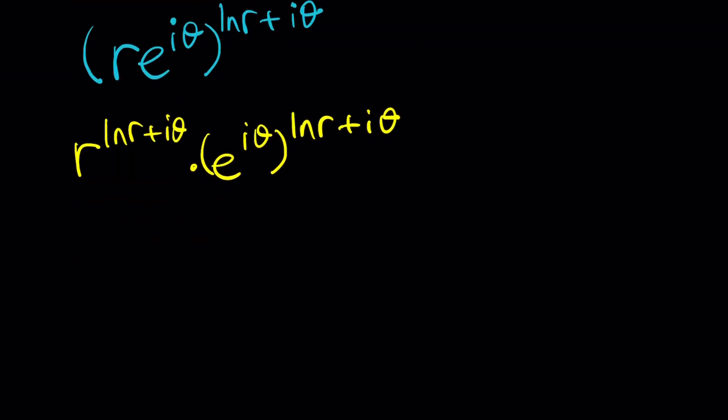So write this as R to the power ln R plus i theta times e to the i theta, and then that is raised to the power ln R plus i theta. We're going to go ahead and separate these. R to the ln R times R to the i theta, and then this one is going to be e to the i theta ln R times e to the i theta ln R times i theta. That's going to be i squared theta squared, but that's negative theta squared. And of course, when I distribute, I'm going to be multiplying those two things.